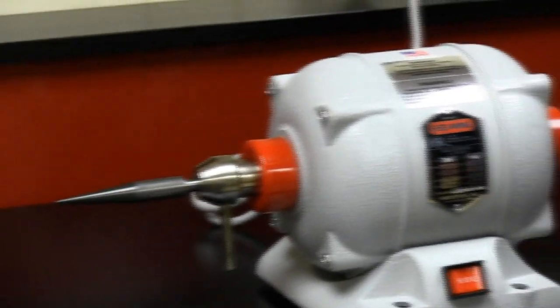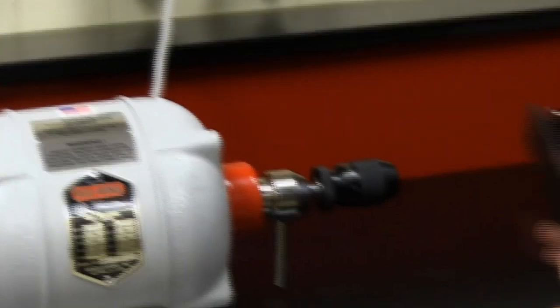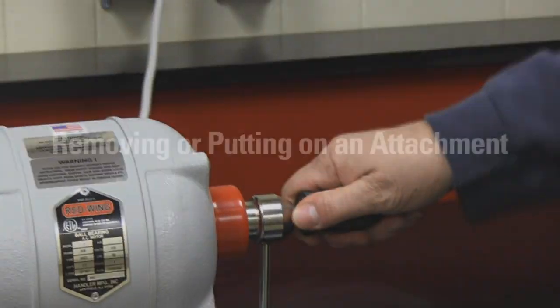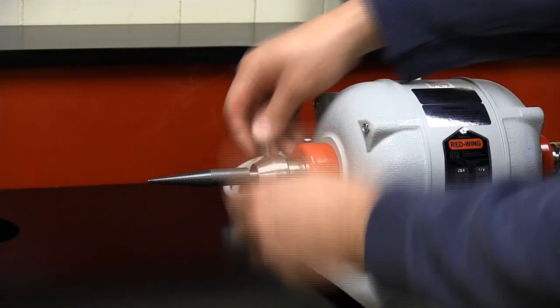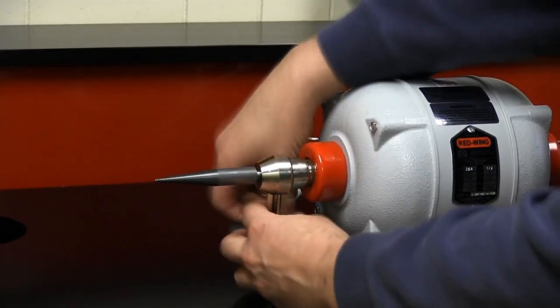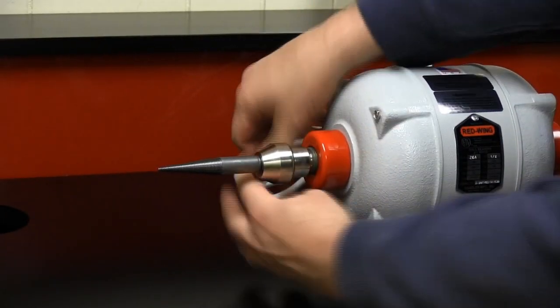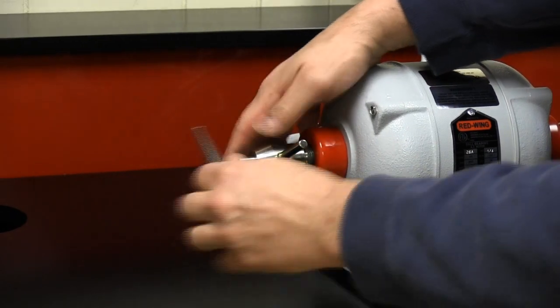Once you've tapped the attachments on, they will not come off unless you use the throw-off to do so. If you want to remove an attachment, you simply unscrew the throw-off until it forces the attachment off.